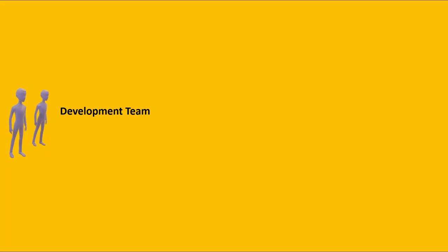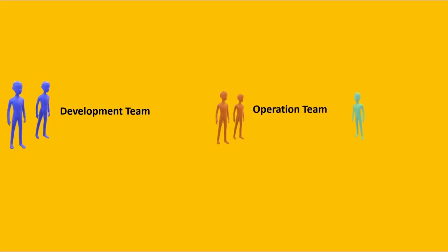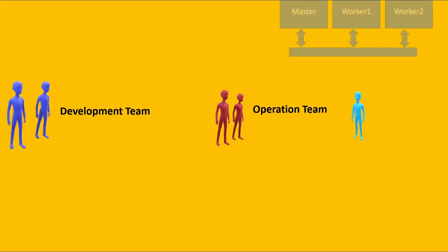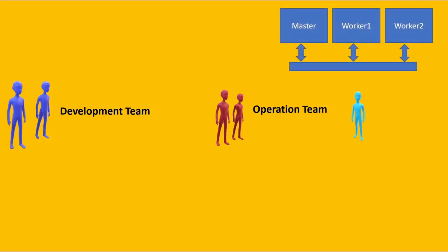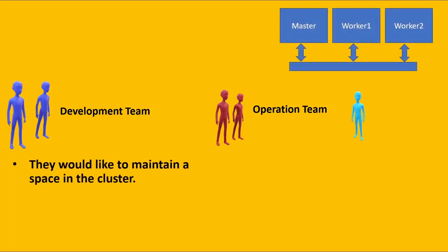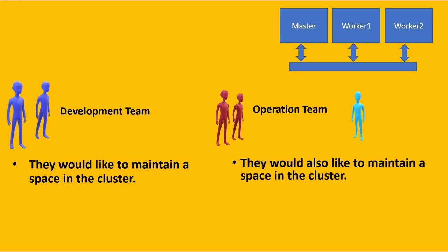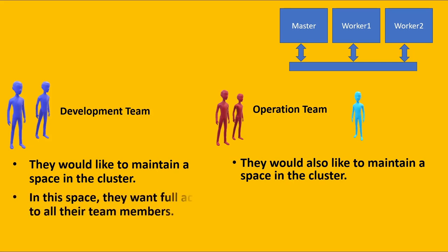The first topic is understanding of namespace. Let's suppose we have two teams in an organization — one is the development team and the second one is the operations team. They are sharing one Kubernetes cluster. The development team would like to maintain a space in the cluster, and the operations team would also like to maintain a separate space in the cluster.